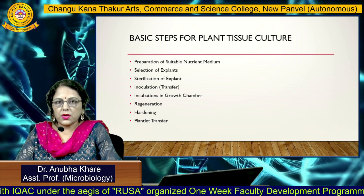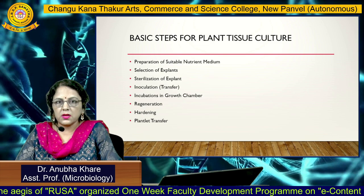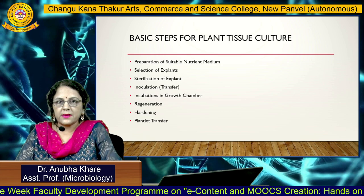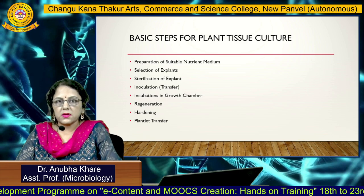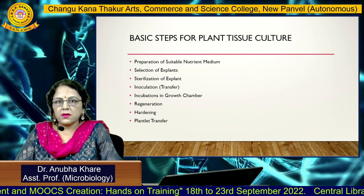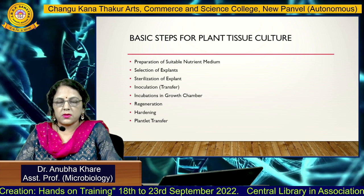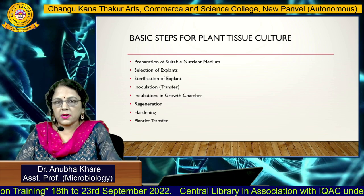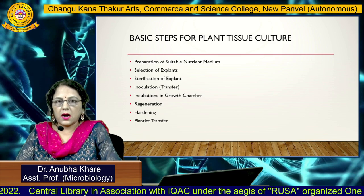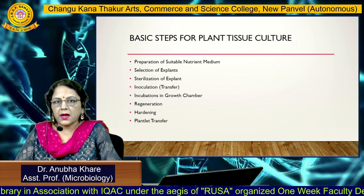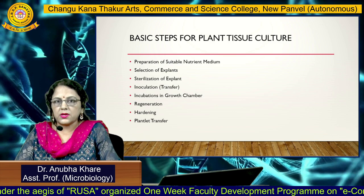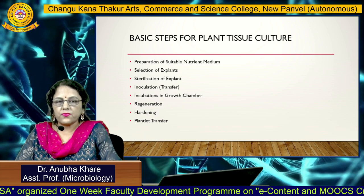Once proper inoculation has been done, it has to be transferred into the growth chamber, which must maintain proper light intensity with 16 hours of photoperiod and 50 to 60 percent relative humidity. The next step is to incubate for around two to three weeks, followed by regeneration — the plant tissue regenerates into young roots and shoots. These small plantlets then have to be transferred for hardening, which is the acclimatization of the plantlet to the environment by transferring to field conditions.